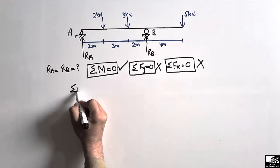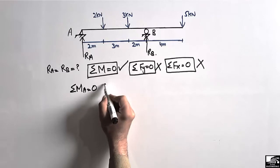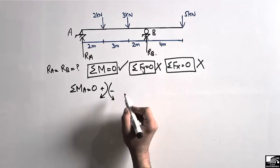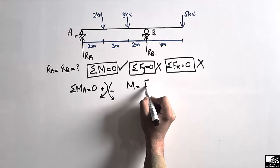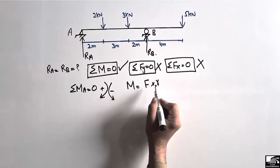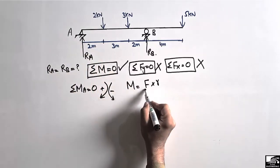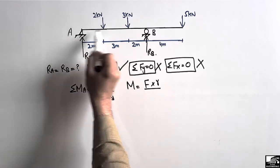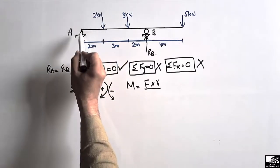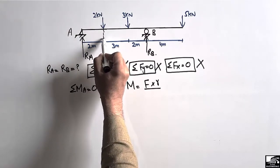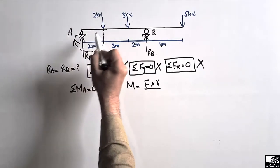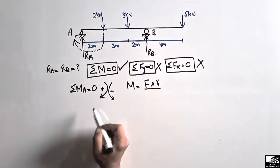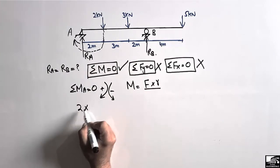Now let's take the summation of moments at point A equal to zero. Clockwise moment is taken as positive and anti-clockwise moment is taken as negative. Moment equals force multiplied by moment arm. Starting from this end, the 2 kN load produces a clockwise moment about point A because this force is acting downward and it will rotate in the clockwise direction, so it is taken as positive.